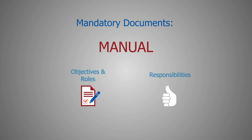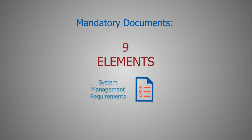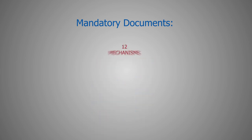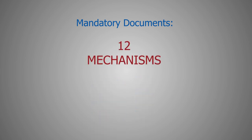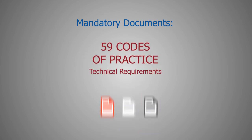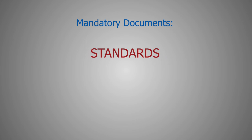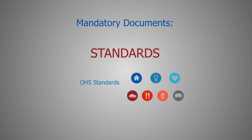Nine main elements that include system management requirements. Twelve mechanisms that include the system processes. A series of technical codes of practice that includes specific requirements covering most activities in the workplace, in addition to OSH standards. In addition to guidelines that are non-mandatory,